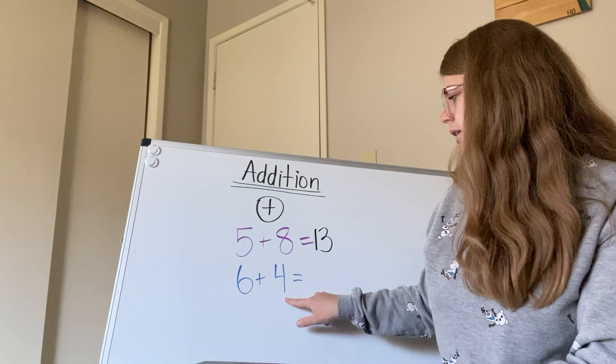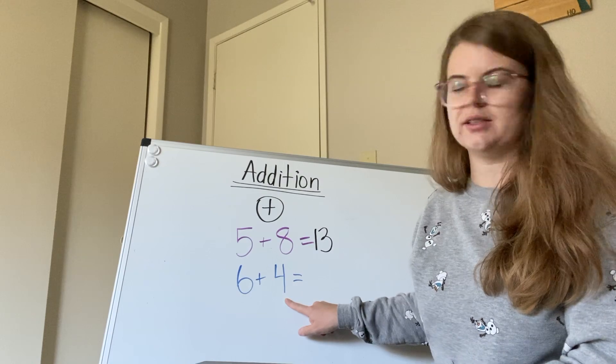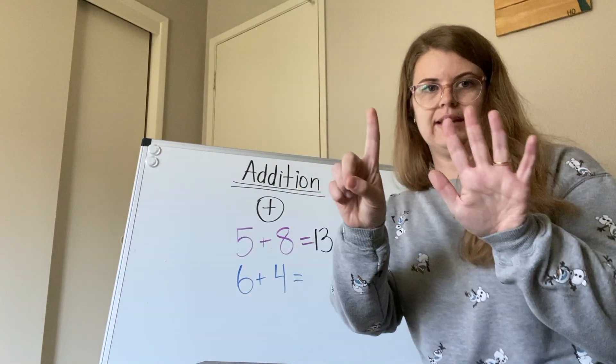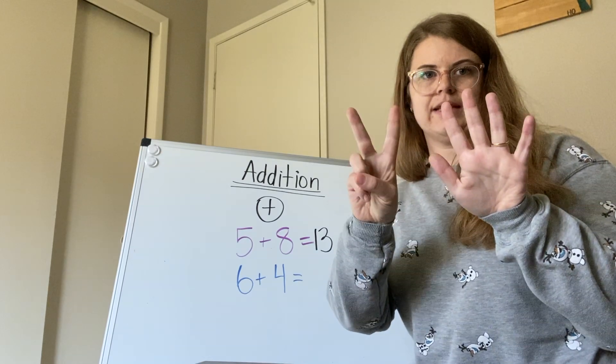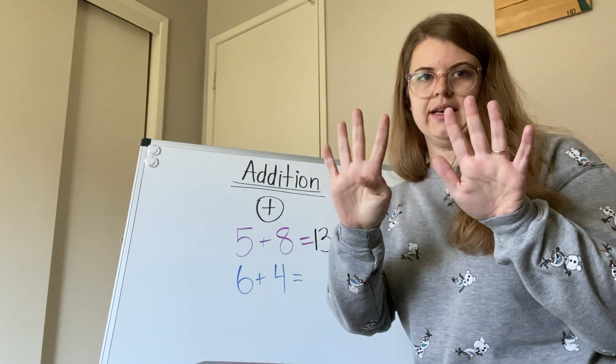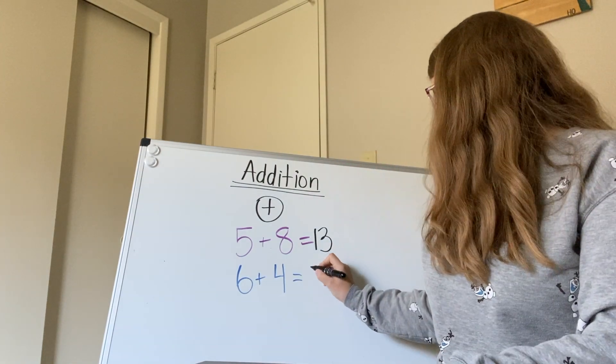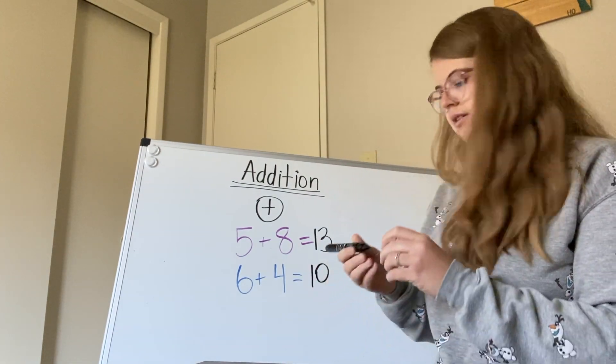For six plus four, I'm going to use the strategy of counting on my fingers. So first, I'm going to count six. And then I'm going to count four more. So I have six, seven, eight, nine, 10. So six plus four, we can see equals 10.